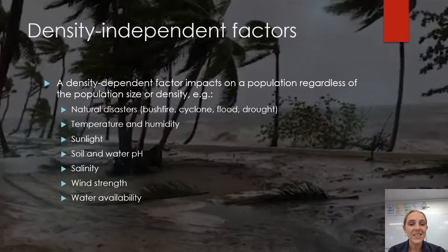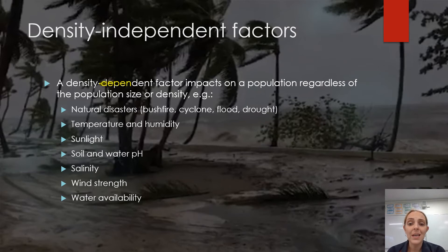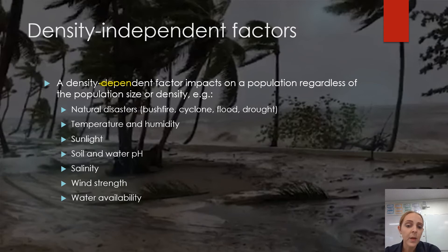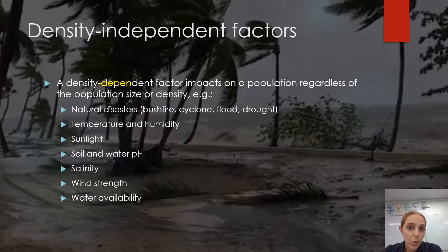Density independent factors impact a population regardless of its size, having the same effect whether in a dense or sparse environment. Examples include natural disasters, bushfires, cyclones, floods, droughts, changes in temperature and humidity, sunlight availability, soil and water pH, salinity, wind, and water availability. These will affect the ecosystem regardless of its density.